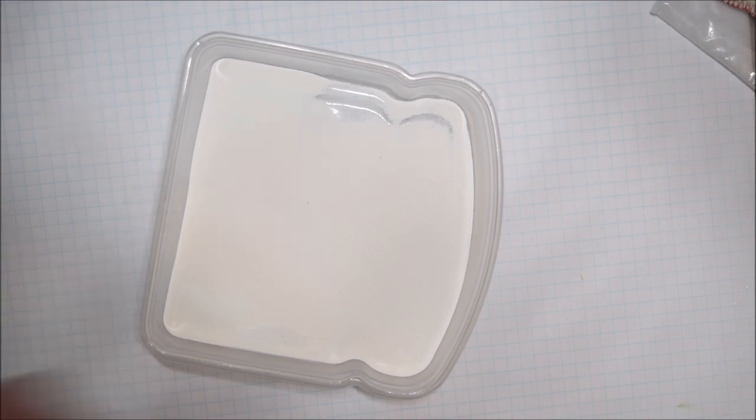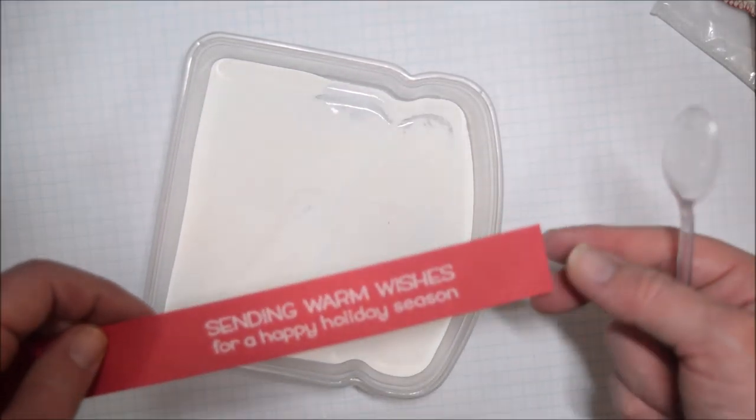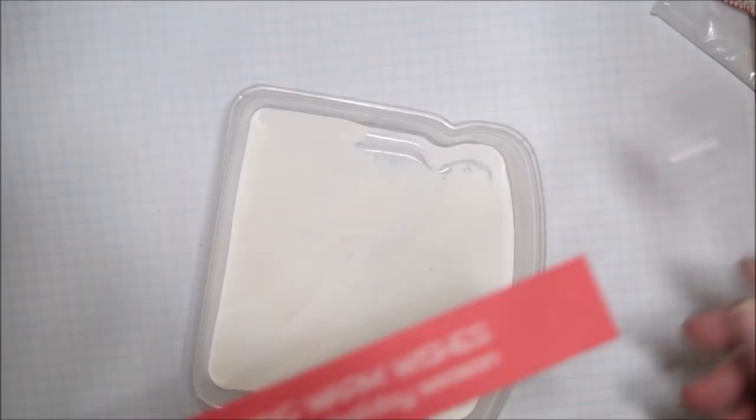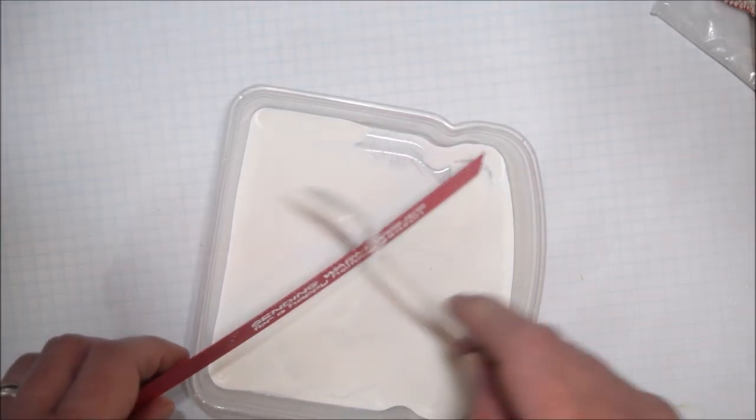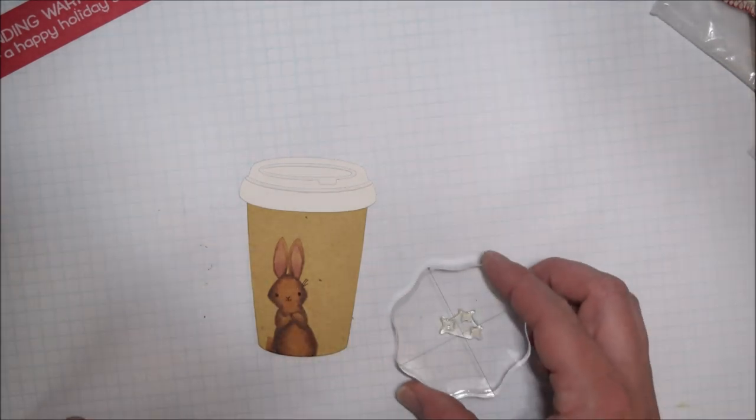Here I was able to stamp the sentiment in Versamark ink and white heat emboss it so that it really stands out. There was no black on this card, and using the craft, I just felt like stamping in black ink wouldn't have looked right. I like the combo of red and craft and white.